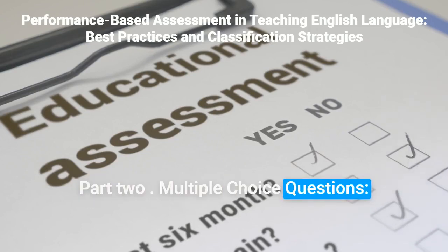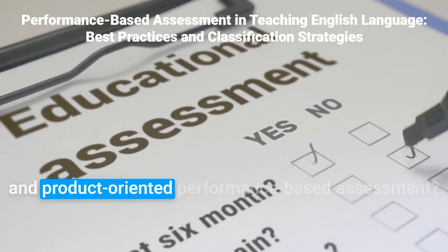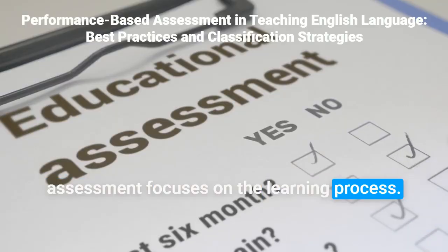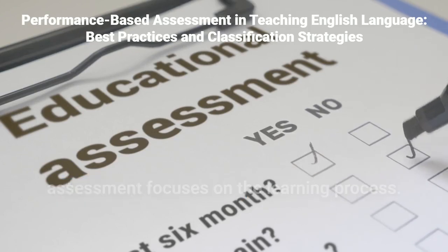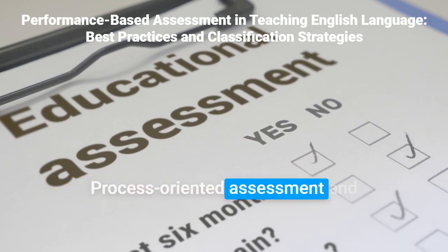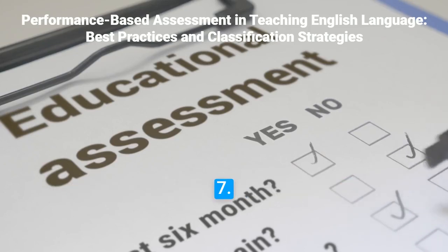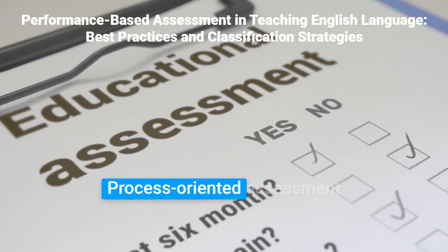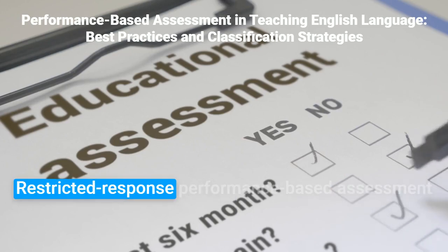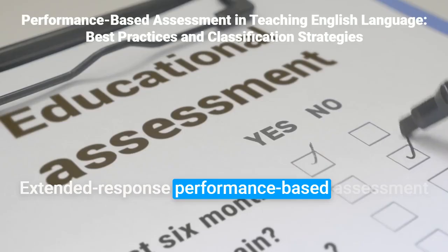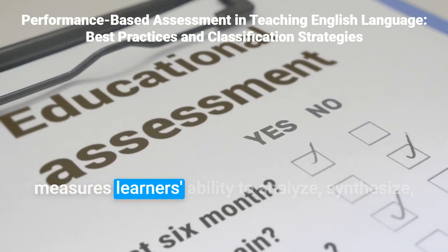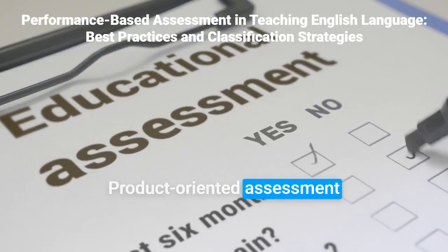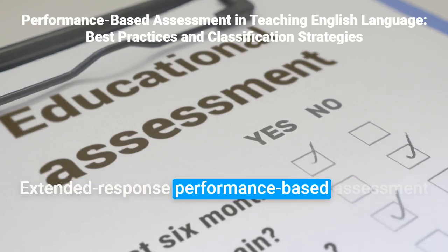Part 2: Multiple-Choice Questions. 6. What is the main difference between process-oriented and product-oriented performance-based assessment? A. Process-oriented assessment focuses on the final product, while product-oriented assessment focuses on the learning process. B. Product-oriented assessment focuses on the final product, while process-oriented assessment focuses on the learning process. C. Process-oriented assessment and product-oriented assessment are the same. D. None of the above. 7. Which type of performance-based assessment measures learners' ability to recall and apply specific knowledge and skills in a specific context? a. Process-oriented assessment. b. Product-oriented assessment. c. Restricted response performance-based assessment. d. Extended response performance-based assessment. 8. Which type of performance-based assessment measures learners' ability to analyze, synthesize, and evaluate information and apply it in novel ways? a. Process-oriented assessment. b. Product-oriented assessment. c. Restricted response performance-based assessment. d. Extended response performance-based assessment.